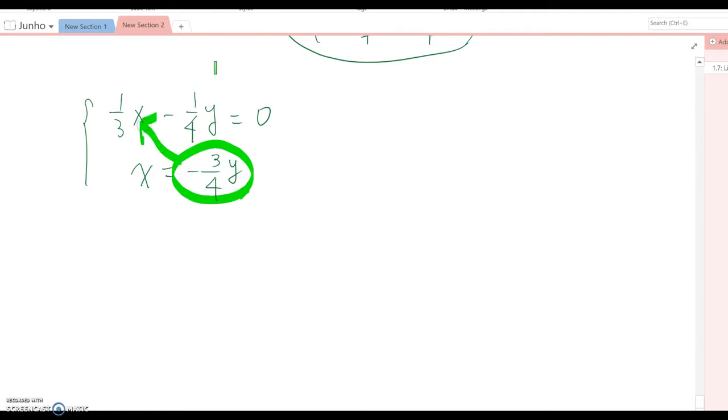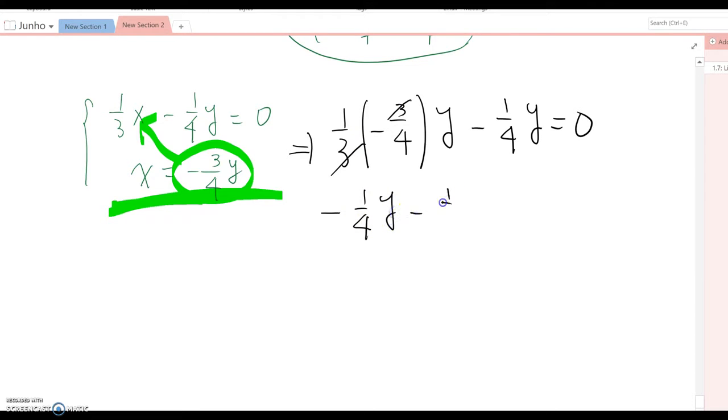Before we do something, I'm going to replace this expression into x here because this equation defines the x value. So this becomes 1 over 3 times negative 3 over 4y minus 1 over 4y equal to 0. Fortunately these two cancel out, so it becomes negative 1 over 4y minus 1 over 4y equal to 0.